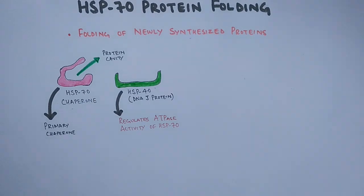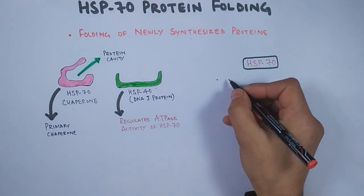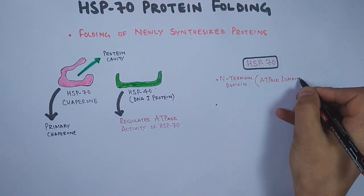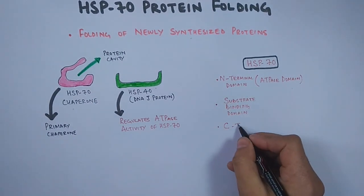Now if we see the structure of the HSP-70 molecule, it has three important structural domains: the N-terminal domain, that's the ATPase domain; second is the substrate binding domain; and third is the C-terminal domain.